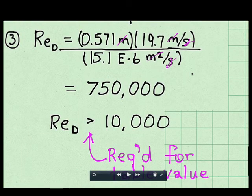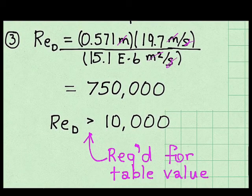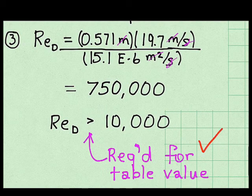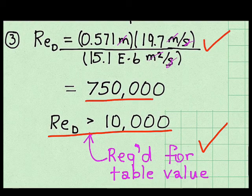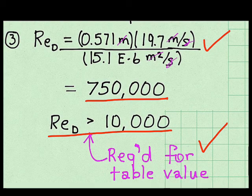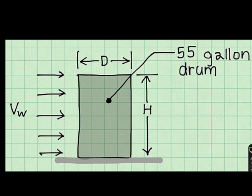When I looked up the coefficient of drag, the table said I needed to have a Reynolds number greater than 10,000. So I calculated a Reynolds number, and you can see the calculation here. I got a value of 750,000. So as shown, this is greater than the criteria of 10,000. This completes the solution.